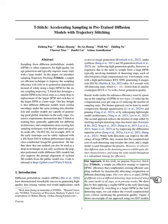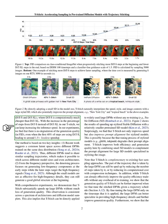This approach enhances the efficiency of DPMs by dynamically allocating computational resources to different denoising steps. Our main idea is to start the denoising process with a smaller DPM and then switch to a larger DPM for the later steps. This allows us to reduce the overall computational costs without compromising on the quality of the generated data. For example, by using two different models, DIT-S and DIT-XL, and increasing the percentage of steps done by the more computationally efficient DIT-S, we can significantly speed up the inference process.